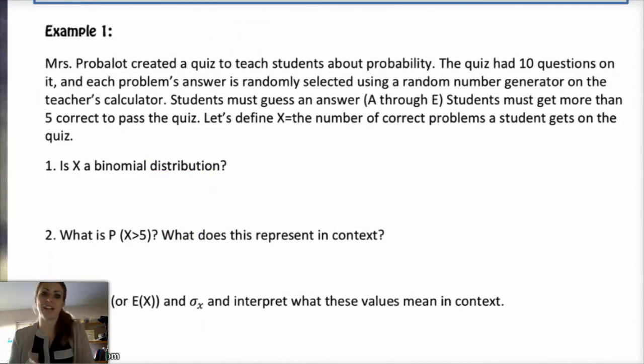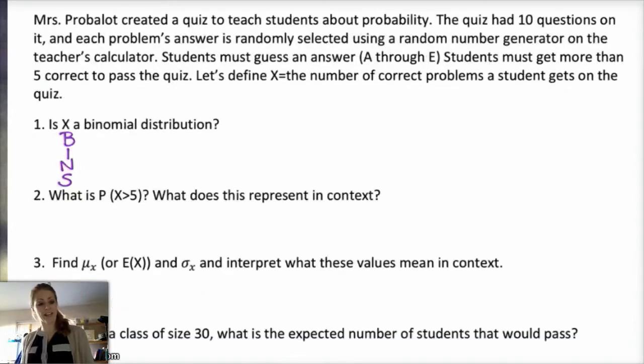We've got Mrs. Probolat creating a quiz to teach students about probability. The quiz has 10 questions. Students have to randomly, she randomly selects the answers using a random number generator. Students have to guess A through E. So there's five options. A, B, C, D, E. Five options. They just have to guess an answer. They have to get more than five problems correct to pass the quiz. So we're going to define the random variable X to be the number of correct problems a student gets on the quiz. So question number one, is X a binomial distribution? Think about your conditions. All right. Is the event binary?